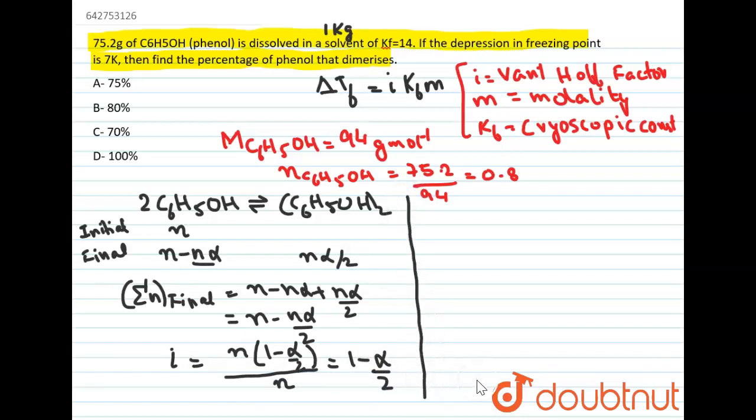So now since we have calculated the value of vanthoff factor, now we'll just use this formula. So delta Tf is given to us as 7 Kelvin, the value of i is 1 minus alpha by 2, the value of Kf is 14, molality will be number of moles of solute which is 0.8 upon mass of solvent which is 1 kg. So from here when you calculate, alpha you will get as 0.75.